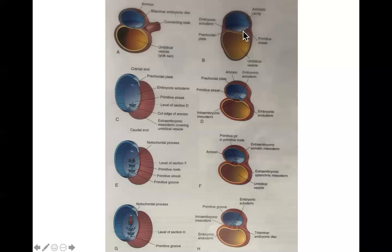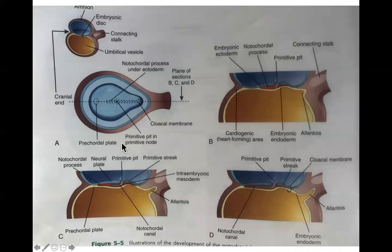By the end of week four, the primitive streak will have done everything it was meant to do. It's going to stop doing anything, and what's going to happen is the rest of the embryo is just going to completely outgrow it, leave it behind, and it becomes an insignificant little speck. What happens next is the mesenchyme of the primitive node begins to grow a process called the nodochordal process.